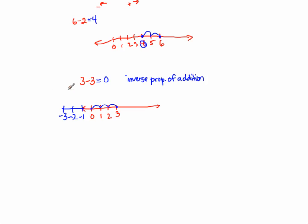If I were asked to go to the left more than 3 while starting at 3, I'd end up in the negative section of the number line. So therefore my answer would be negative. I want you to understand this concept, because it's going to help you when we get into the problems throughout this presentation. Let's get into some examples.